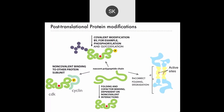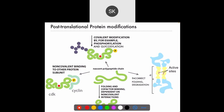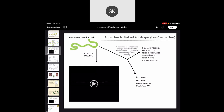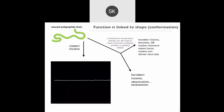Some proteins don't need a cofactor at all. All of these options — covalent modification, non-covalent binding, and folding and cofactor binding — happen to only some proteins. You would need to know the specific protein to know whether it will experience any of these modifications. Protein folding is really important because the shape of a protein is tightly connected to its function — if a protein is not the correct shape, it's not going to function correctly.